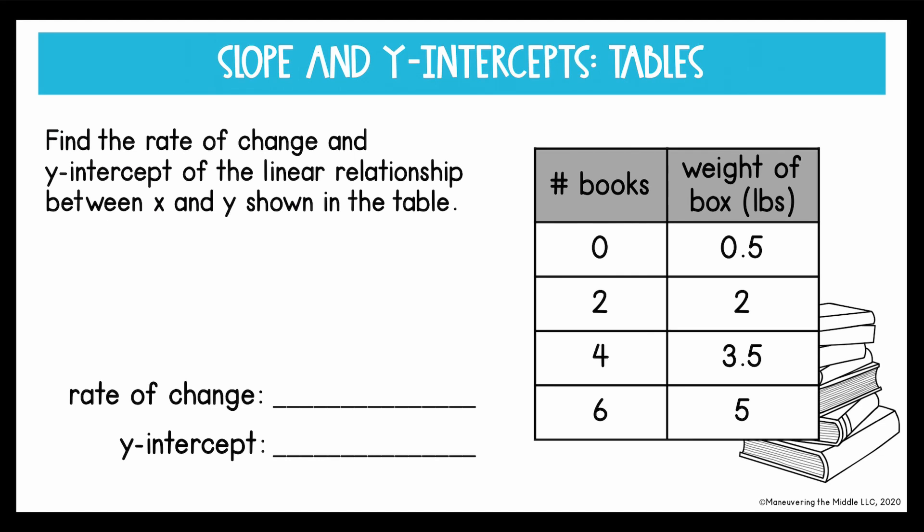Let's try another table to find the rate of change and the y-intercept. So rate of change, again, is equal to our slope. So I'm going to write out my slope formula. And I can choose any two ordered pairs from the table. I'm going to choose the values that don't have decimals. So I will use 2, 2, I'm going to write them up here, and 6, 5.